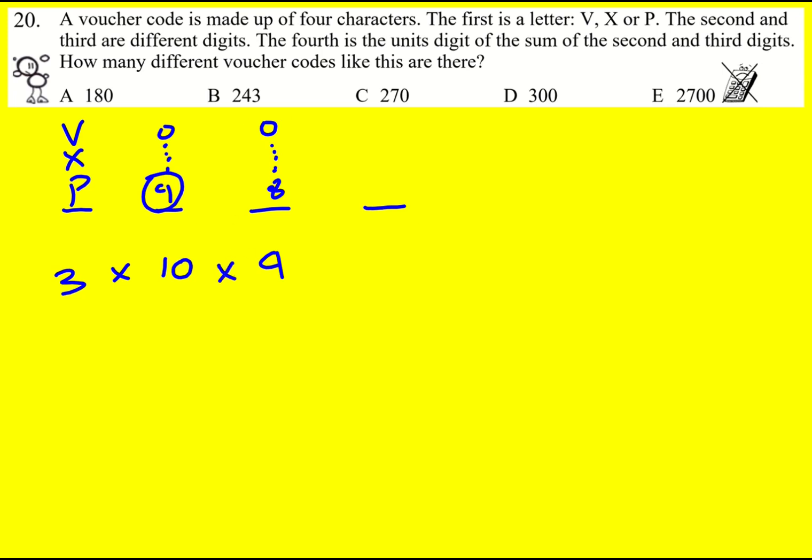Finally the fourth digit is the units digit of the sum. Now because we've already picked the second and the third one actually this one is defined. So if I'd picked a nine and eight for example this would have to be seven. So this one is determined by all the other ones and there's actually only one option for it whatever comes from the second and the third one. So you have to be aware of that in this question.